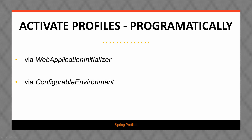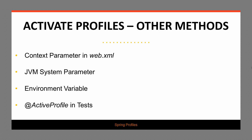Next, we're going to have a look at how to activate profiles. We're going to start with a programmatic way of doing that. One is via the WebApplicationInitializer interface, and another is using the ConfigurableEnvironment abstraction. Programmatic setting of profiles can happen anywhere in the application, and these are just two good ways to do that. And finally, we're going to be looking at some other methods: in a web application we can use the web.xml with a context parameter, a JVM system parameter, an environment variable, and in tests we can use the @ActiveProfiles annotation.